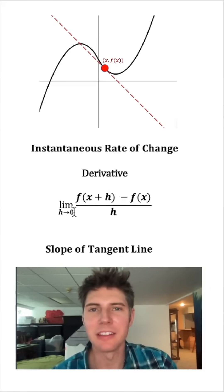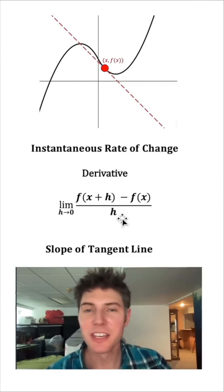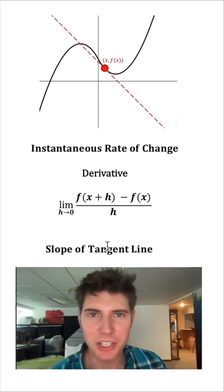So why did we make this a limit? Why don't we just say h is zero? Because if we made h zero, that would make this division by zero and we can't do division by zero. So this is the magic of calculus. Continue watching to see it work.